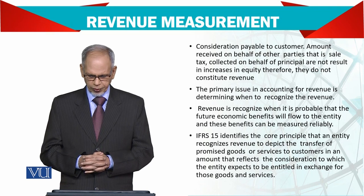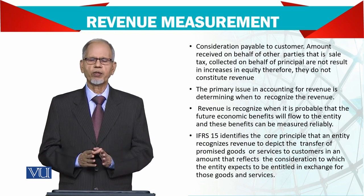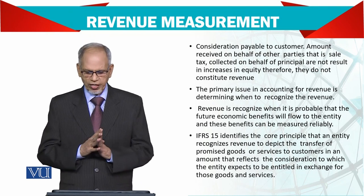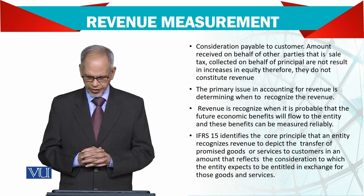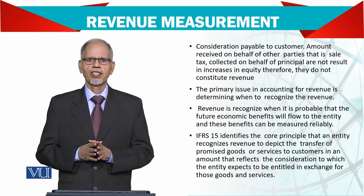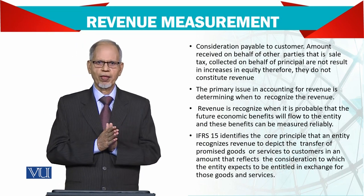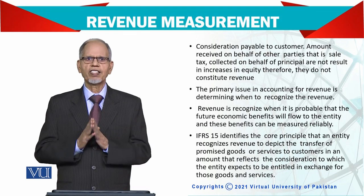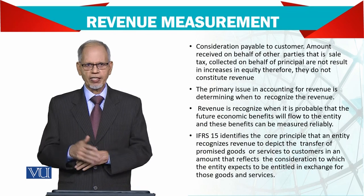IFRS 15 identifies the core principle that an entity recognizes revenue to depict the transfer of promised goods and services to the customer. When you enter into a contract, you promise to sell goods or services, and revenue is recognized only once those goods and services are transferred. The amount reflects the consideration to which the entity expects to be entitled in exchange for those goods and services. All of this — timing, price, terms — should be clearly stated in the contract. There are five steps involved in this process, which we will discuss later.